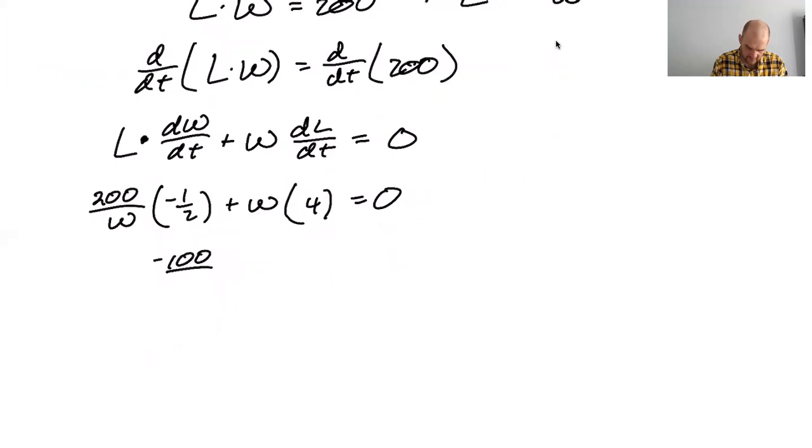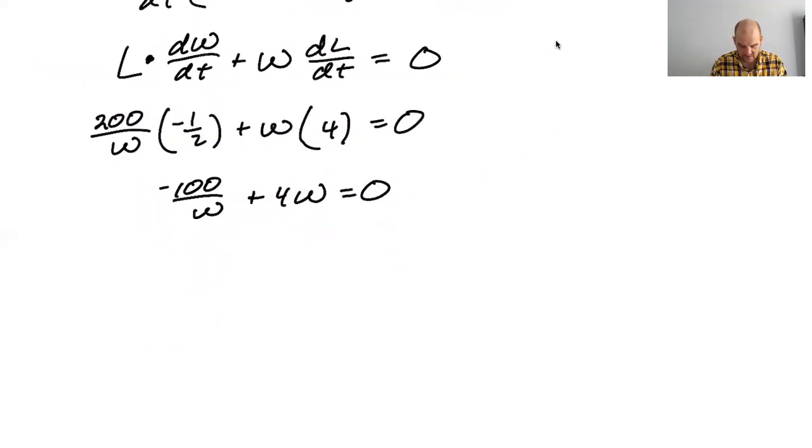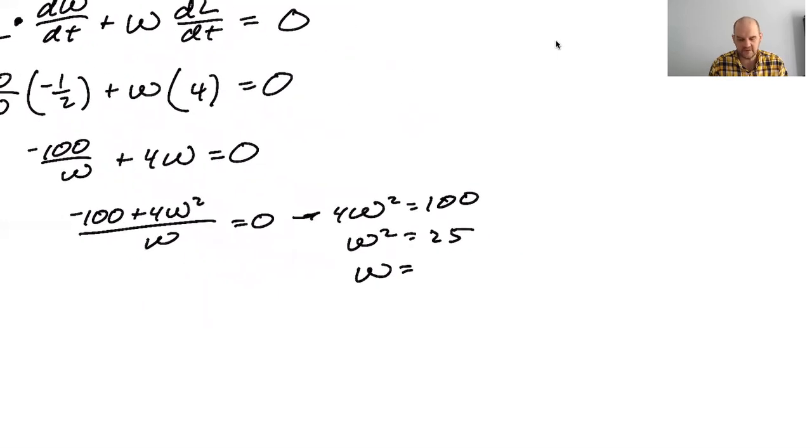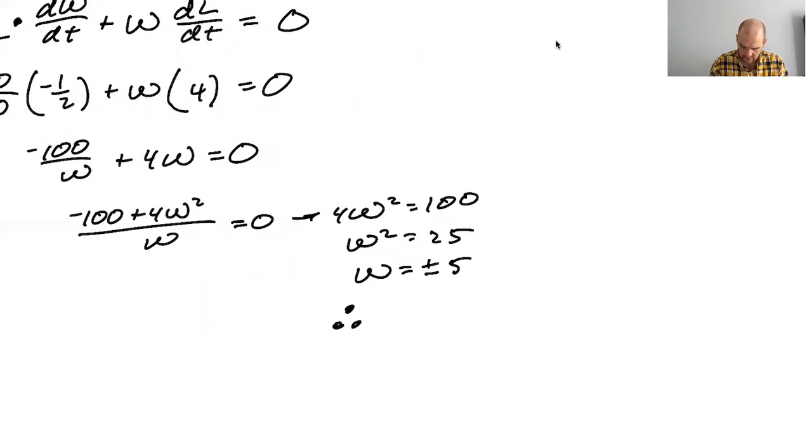So negative 100 over W plus four W equals zero. I thought I was missing some piece of information. I guess I sort of was. Negative 100 plus four W squared over W equals zero. So four W squared equals 100, W squared equals 25, W equals plus or minus 25. But, since it's plus or minus five, I should say,